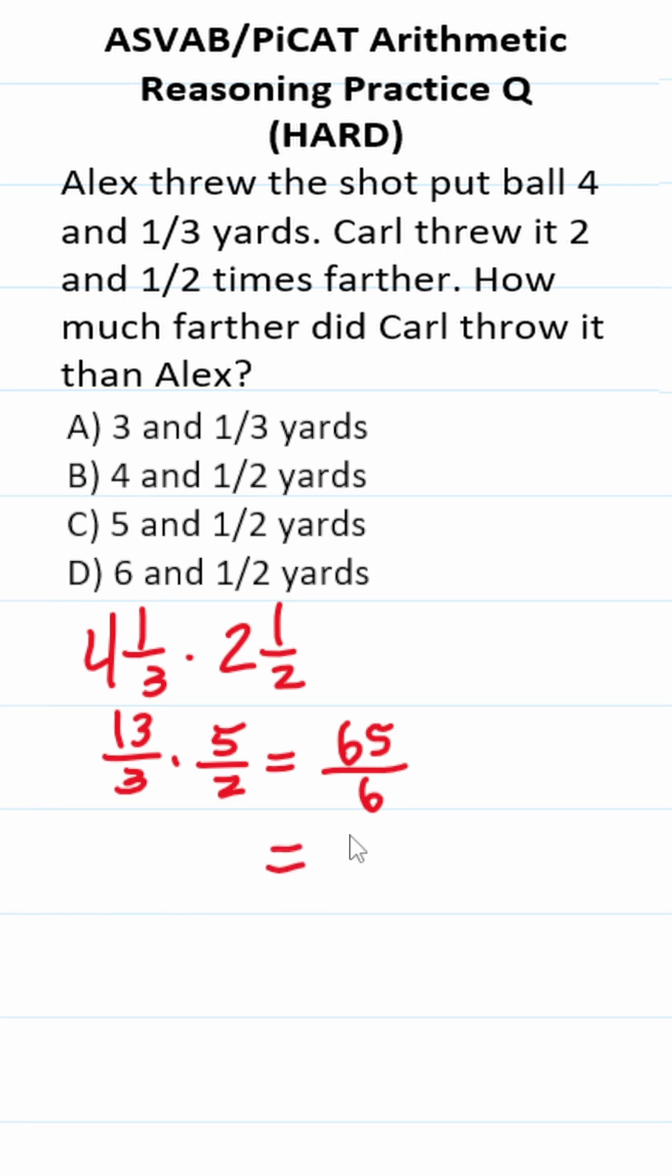Let's convert this back to a mixed number via division. 65 divided by 6 is going to be 10. 10 times 6 is 60, with 5/6 left over. So Carl threw the shot put ball 10 5/6 yards.